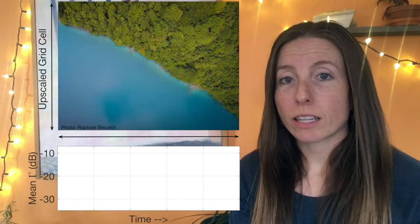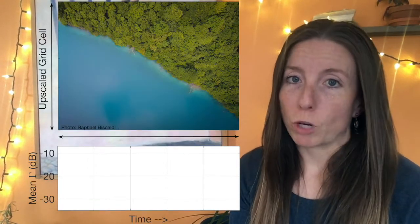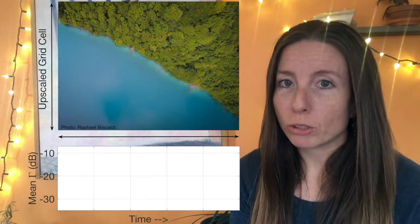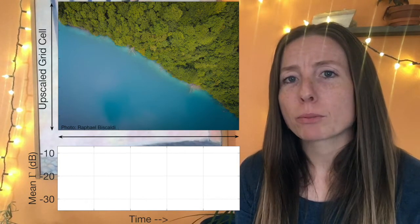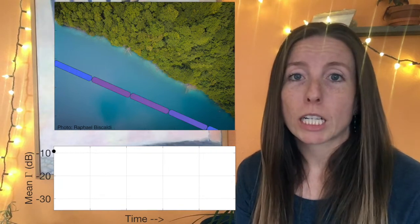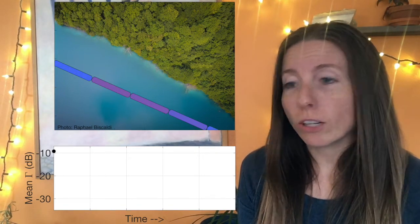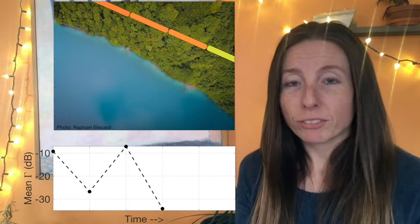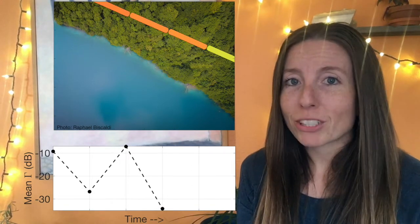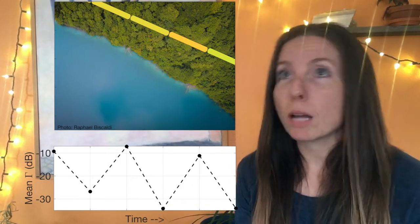For example, let's say that one of your upscaled grid cells happens to fall on the border between land and water. It's totally possible that on any given day, all of your reflectivity observations will fall over the water. Maybe the next day they'll all fall over the land, next day over water, next day over land, so that your reflectivity time series ends up going up and down repeatedly. And it makes these data practically impossible to interpret.